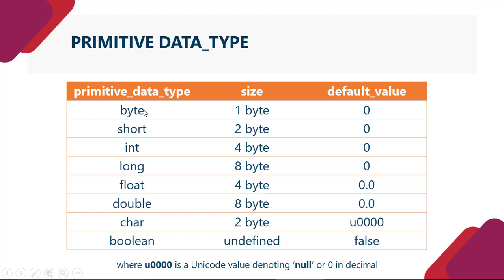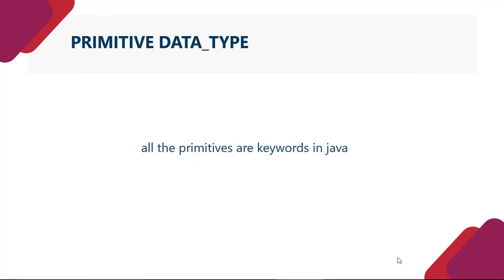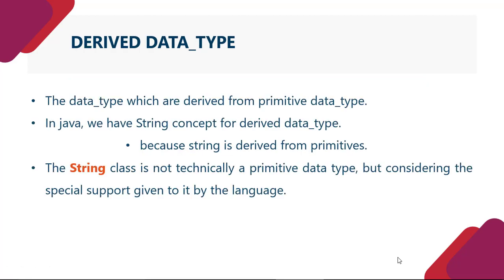Ab yahan par default value. Agar hum kisi bhi variable ko mechanism par process kar rahe hain, aur byte ki value hum assign de nahin di, yahan par phir compiler ko hi assign karta hai automatically. Toh jo byte ki hoti default value woh zero. Short ki zero, integer ki zero, long ki zero, float ki 0.0, double ki 0.0. Jo char hota hai uski jo default value hoti hai woh u0000. Jo boolean hai iski jo default value hai woh hai false, where u0000 is a unicode value denoting null aur 0 in decimal.